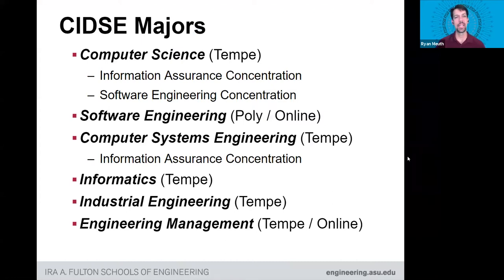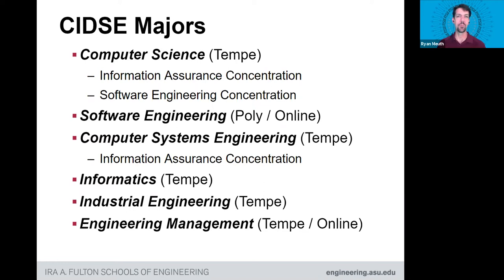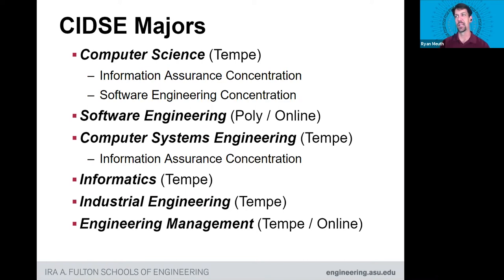What I'm going to be talking about today is a quick overview of some of the majors and what they look like in terms of their structure, what you can end up doing with them, and what the experience at ASU is like. CIDSE — Computing Informatics Decision Systems Engineering — consists of Computer Science at the Tempe campus, Software Engineering at Poly and Online, Computer Systems Engineering at Tempe, Informatics at Tempe, Industrial Engineering at Tempe, and Engineering Management at Tempe and Online. We have some concentrations in Information Assurance and Software Engineering, and we're standing up one in robotics that's not fully fleshed out yet.